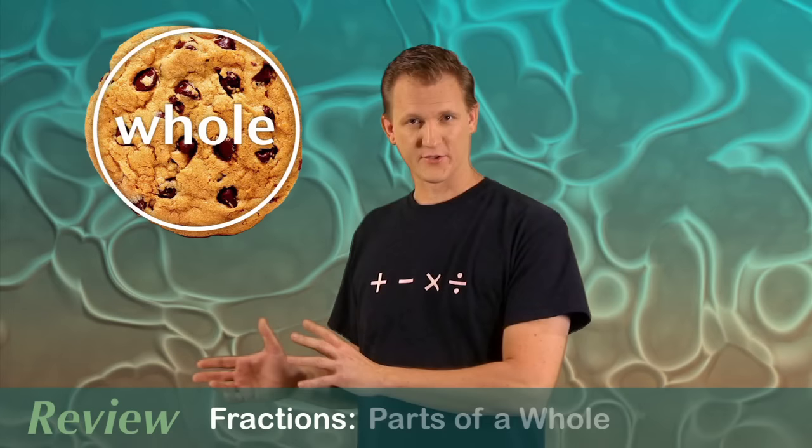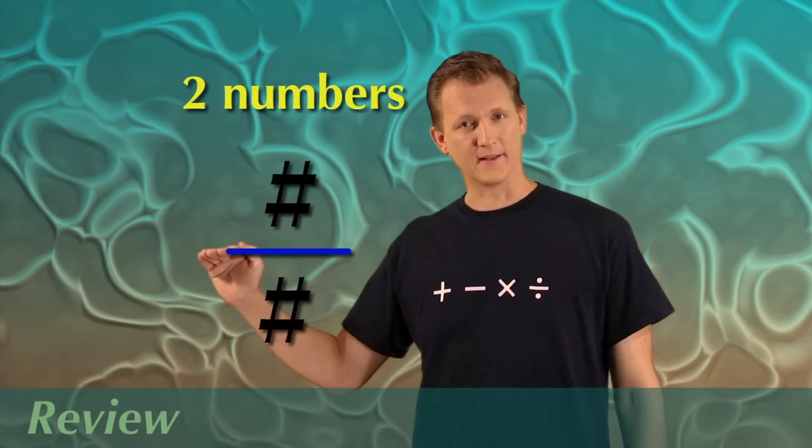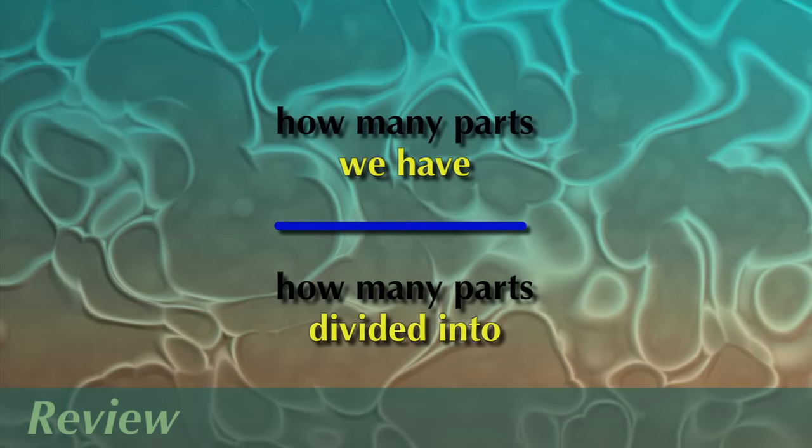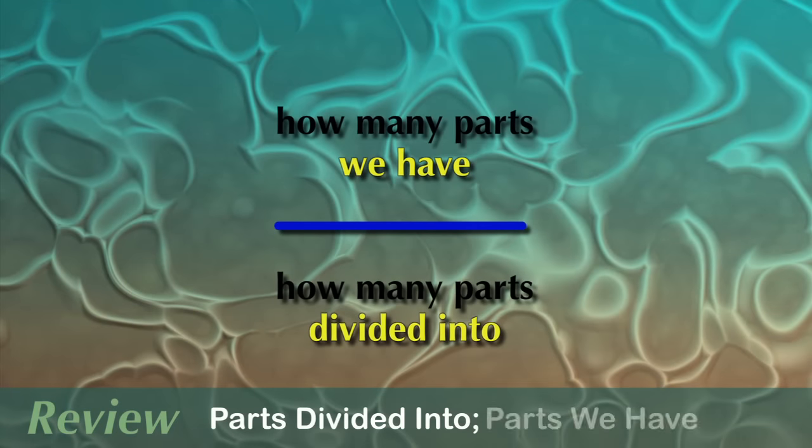Fractions are used to represent parts of a whole. Fractions are written in the form of a top number over a bottom number with a line between them. The bottom number represents how many parts the whole is divided into, and the top number represents how many of those parts you have. And finally, the parts that a whole is divided up into must be equal for fractions to work right.